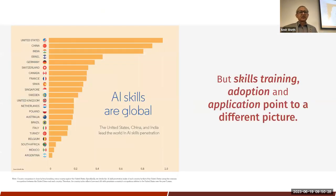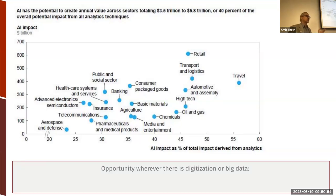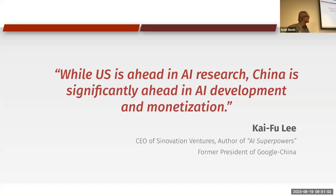AI skills are global — the US, China, and India are all competing to be at the top. AI is also being applied across all industries: chemical engineering, physics, materials science — whatever field you choose, you'll find AI being used there.